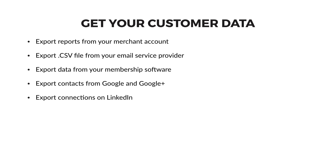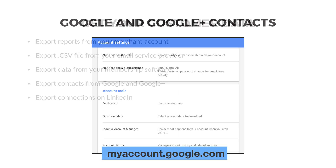If you have a membership site using a system like Digital Access Pass, A-Member, Wishlist, etc., you can export your membership list as a CSV file as well. You can also advertise directly to your connections on Google and Google Plus, and even on LinkedIn. This is a hidden feature of these two social networks that few people take advantage of but may prove very beneficial to you.